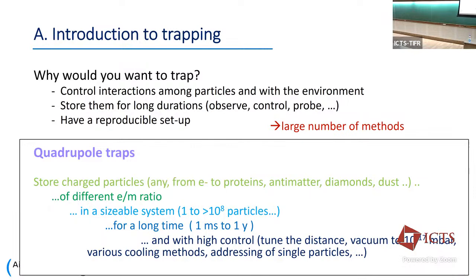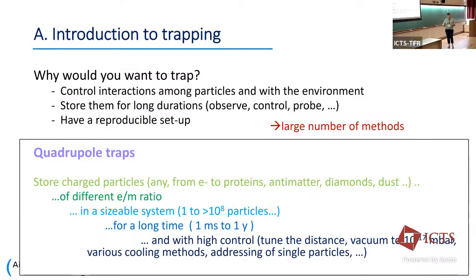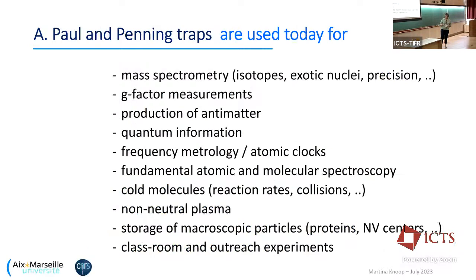In all these traps we can work with very high control. We can tune the distance between ions, operate in vacuum down to 10⁻¹⁷ millibar in cryogenic conditions. There are various cooling methods, and we can address single particles. This very high control is one of the main advantages of these traps for precision spectroscopy experiments.